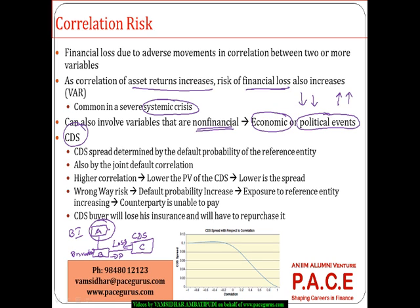Now think of how correlation is really impacting here. What should be the profile of C? The C that I choose should be in such a way that A and C are uncorrelated or do not have much correlation. Because if both of them are heavily positively correlated, if A defaults, C also will default — then what is the need for me to go to C for protection?